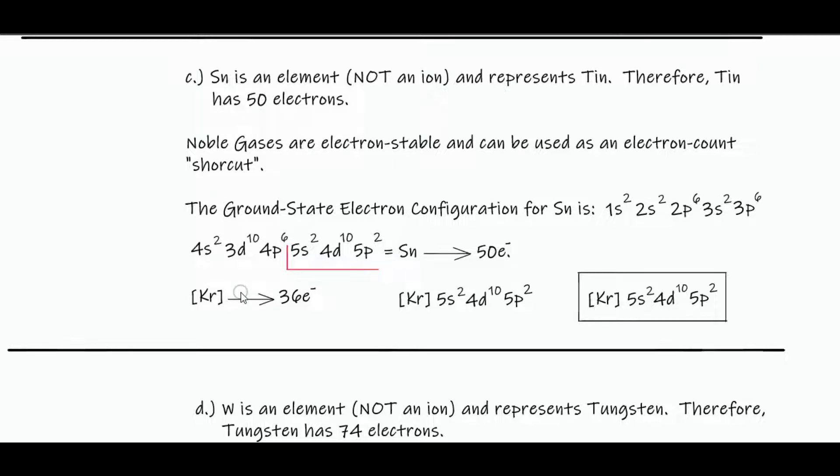So the ground state electron configuration for tin is krypton, 5s2, 4d10, 5p2.